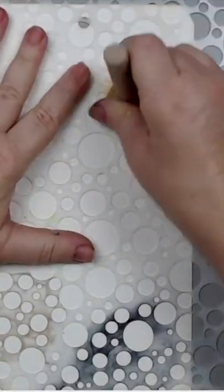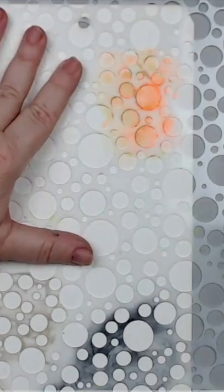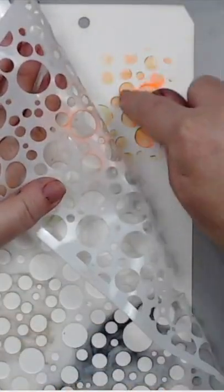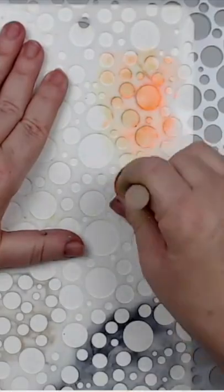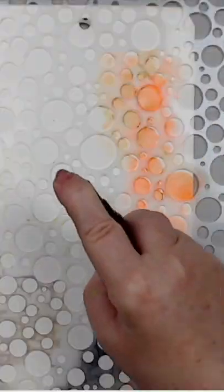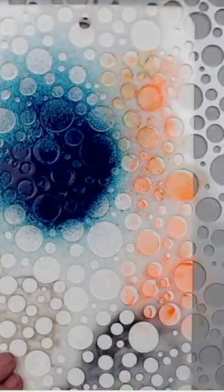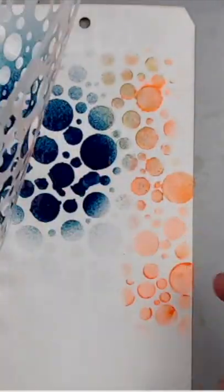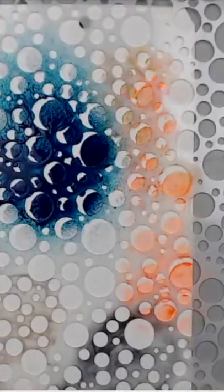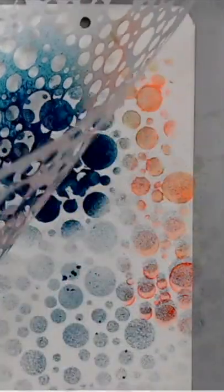When using acrylics, remove as much of the paint from the sponge before applying it. It's best to dab instead of rubbing back and forth as the paint might bleed underneath. When using sprays, spraying too much or too close could create pooling under the stencil. Hold your spray bottle further from the stencil to get a crispier design.